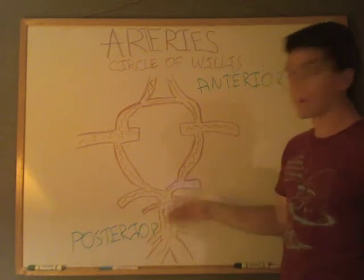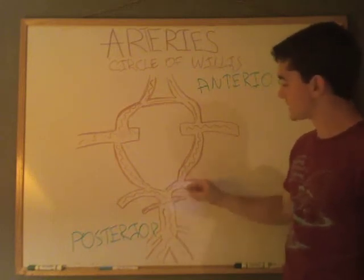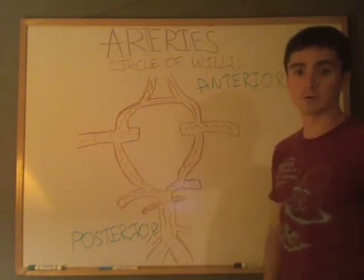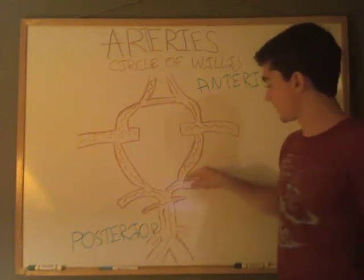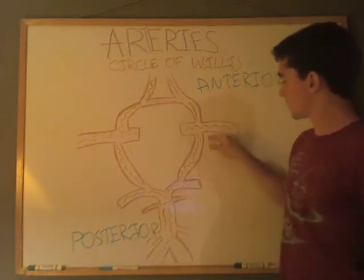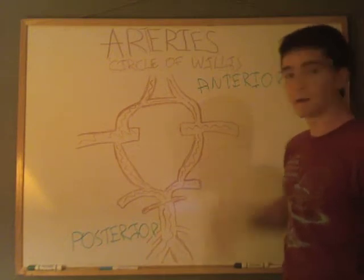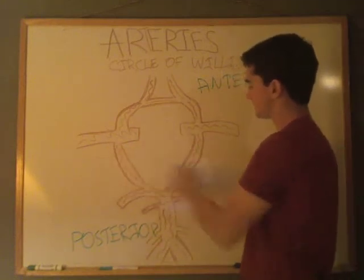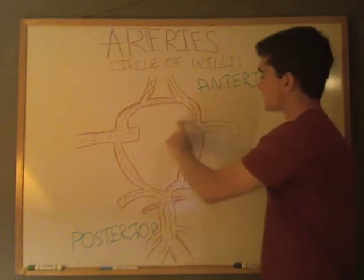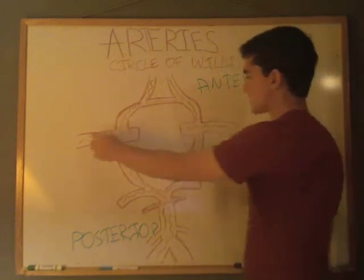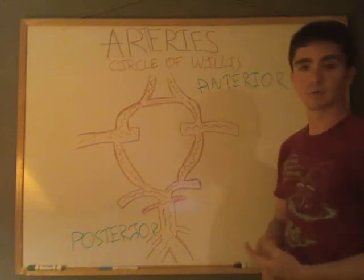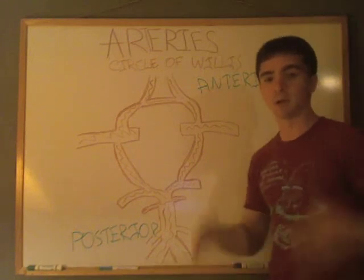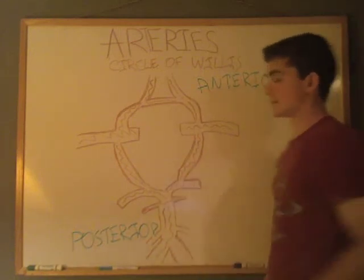From the basilar artery, going more anterior, we have these two structures called the posterior cerebral arteries. Going more anterior from those, we have the posterior communicating arteries — these two structures right here. Then in the middle, the ones on the outside are the middle cerebral arteries, which come around and provide oxygenated blood to the middle cerebrum, just as the name implies.